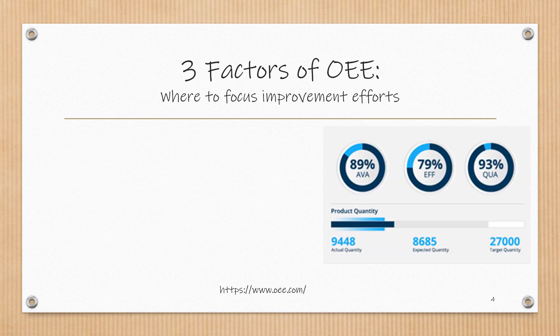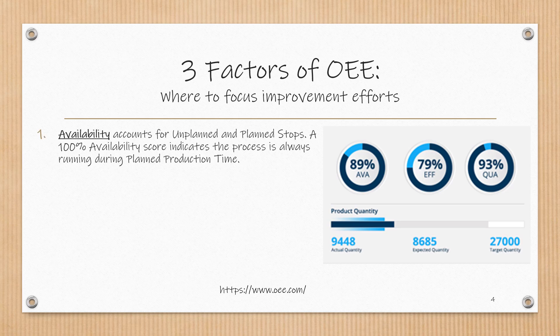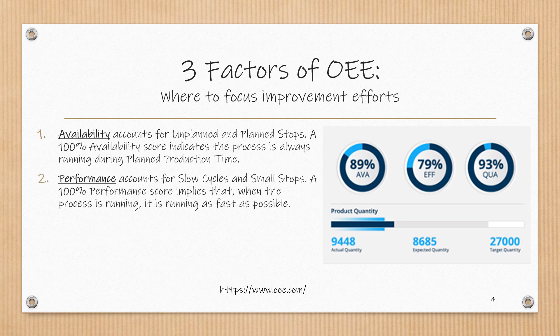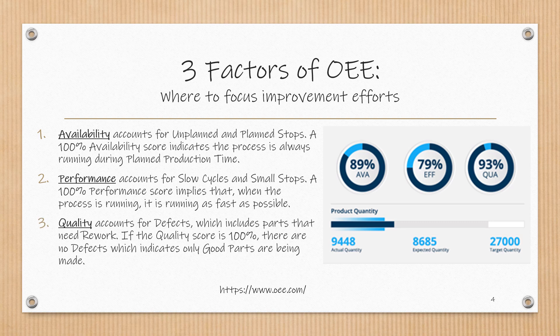Now let's define the three fundamental factors used to calculate the OEE metric. Availability accounts for unplanned and planned stops; a 100% availability score indicates the process is always running during planned production time. Performance accounts for slow cycles and small stops; a 100% performance score implies that when the process is running, it is running as fast as possible. Quality accounts for defects, which includes parts that need rework. If the quality score is 100%, there are no defects, which indicates only good parts are being made.